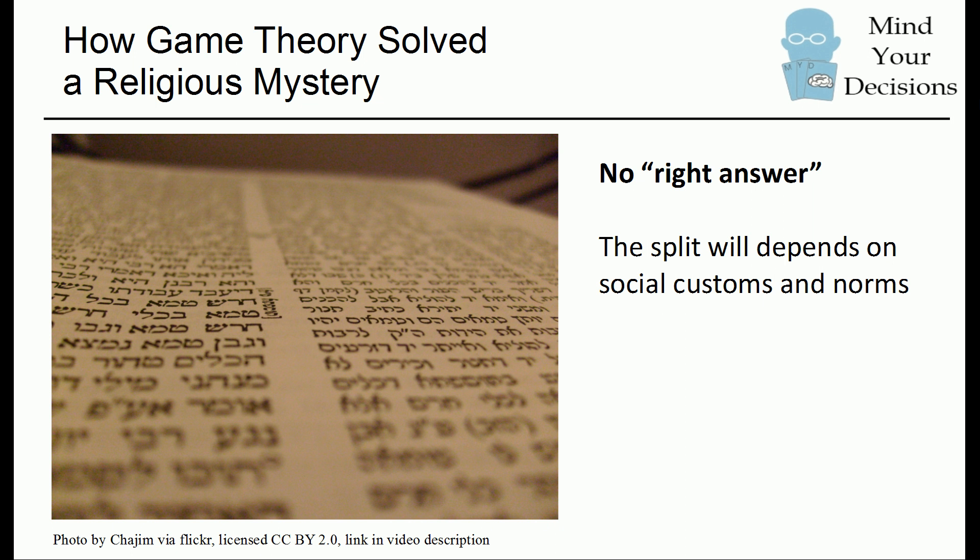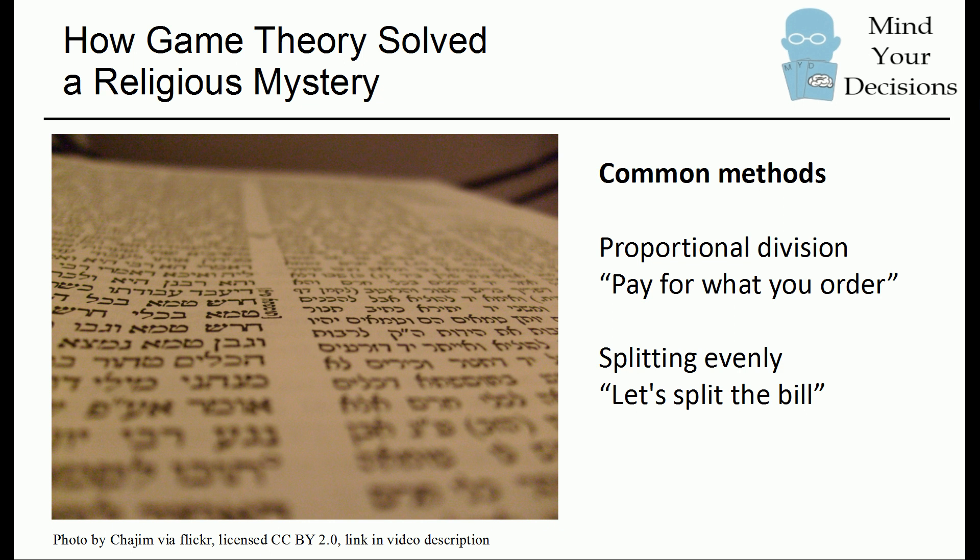What will be interesting is to see that whenever you have a method, you're interested that it's consistently applied to everyone, and you're also curious about what the rationale is. Some people are fine with proportional division, which is paying for what you order. Other people just like to split the bill evenly — there are 10 people, so divide the bill by 10.